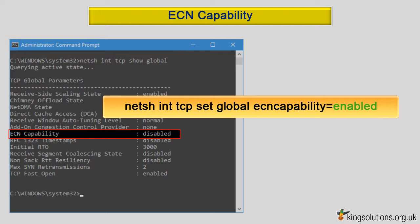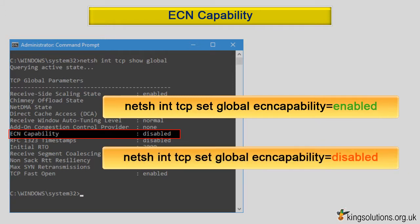netsh int tcp set global ecncapability=enabled and press enter. If your router doesn't support ECN, or your connection has no significant packet loss, then you probably need to leave ECN turned off. So if it's currently on and you're not sure why, enter: